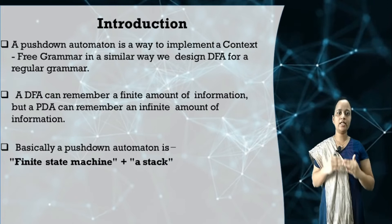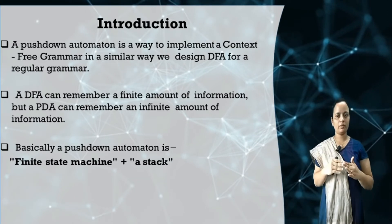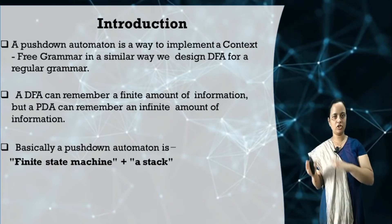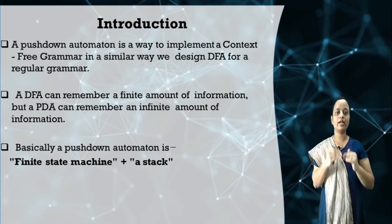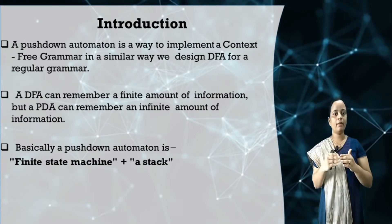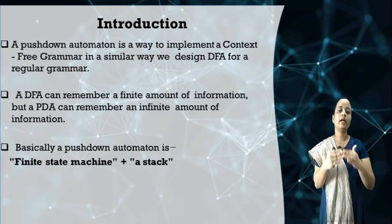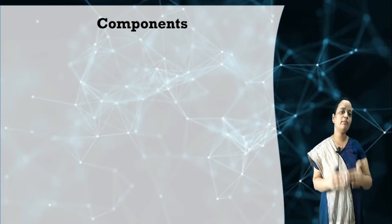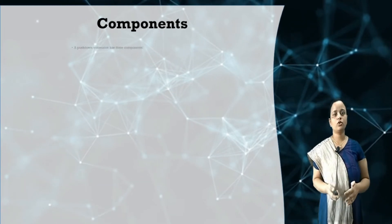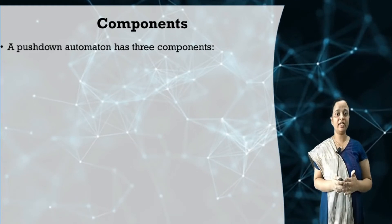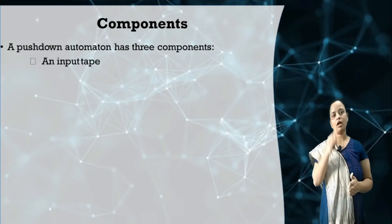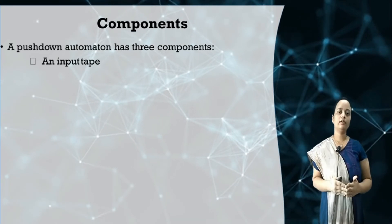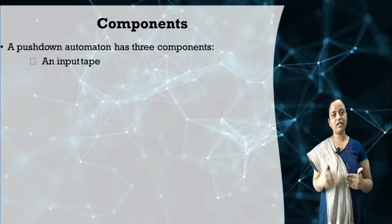PDA is more powerful than finite automata because it can remember an infinite amount of information, whereas finite automata can remember only a finite amount of information. Now, what components does pushdown automata include? There are three main components. The first component is the input tape, which is divided into a number of cells where each cell holds one input symbol.